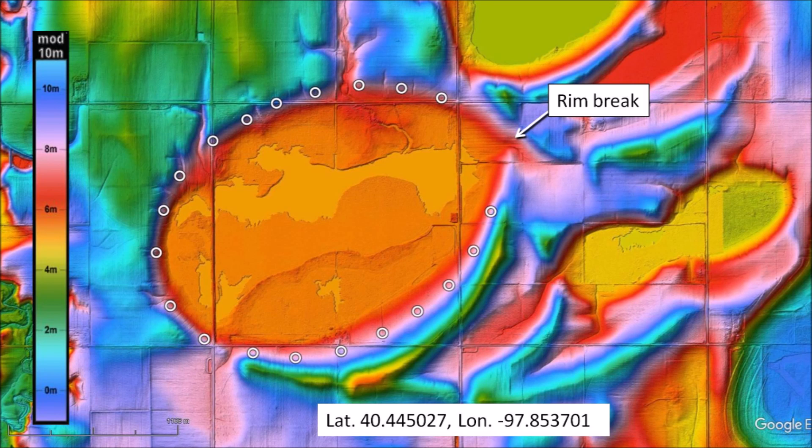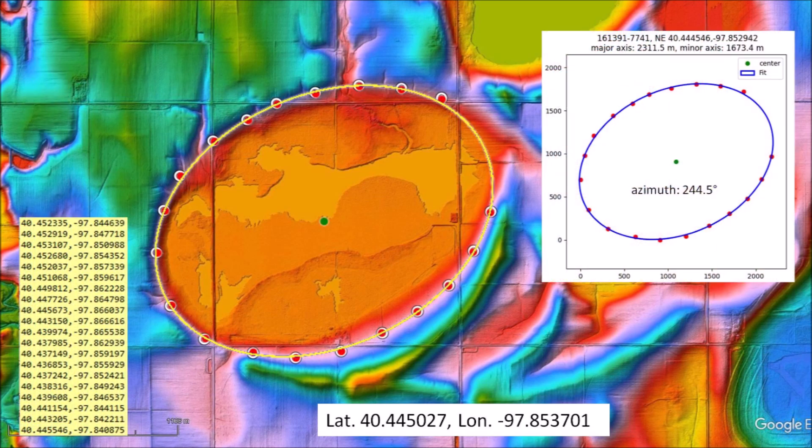Notice that no points were selected near the rim break that distorted the shape of the basin. After fitting the points with an ellipse by the least squares method, we can see that all the points touched the ellipse. This indicates a good fit. The fact that the Nebraska Rainwater Basins have elliptical geometry just like the Carolina Bays is an indication that these geological features originated as inclined conical cavities, because ellipses are conic sections.